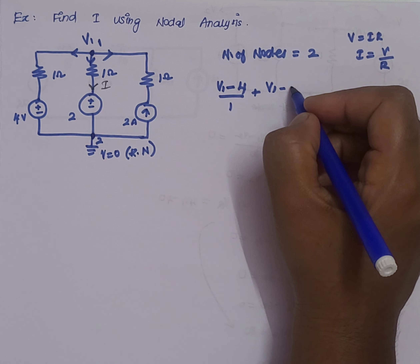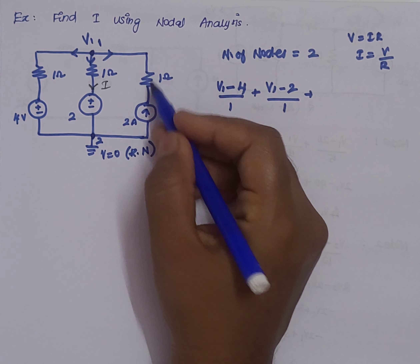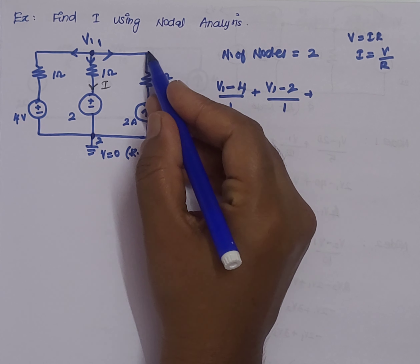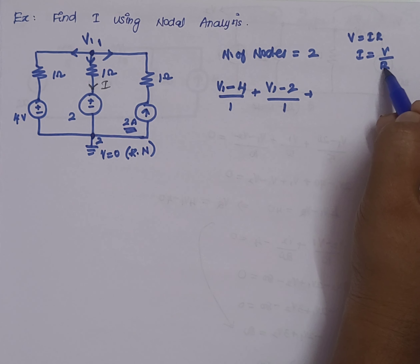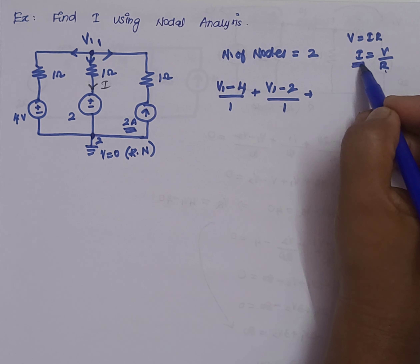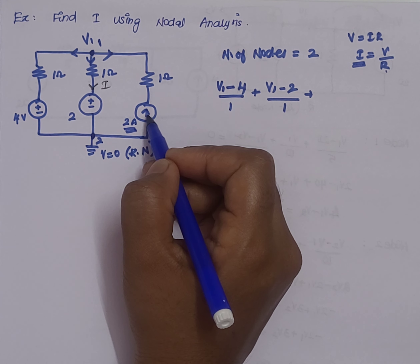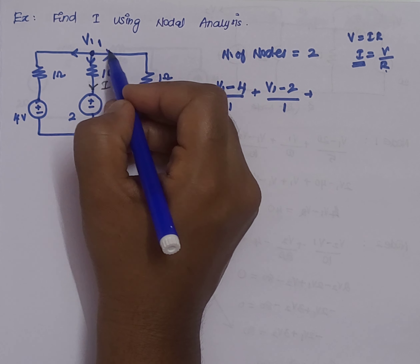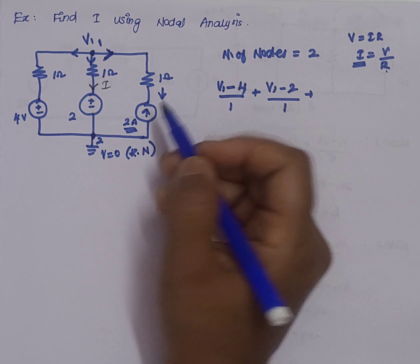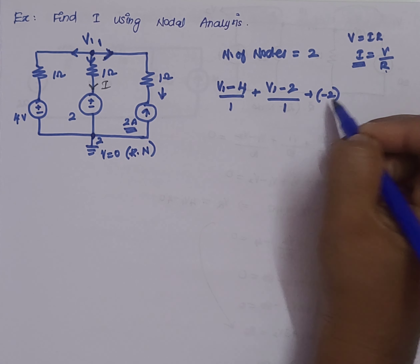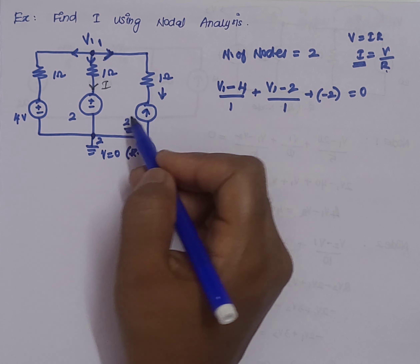For the second branch, the current is (V1 − 2) / 1, since the voltage source is 2V. For the third branch, the current source value is directly 2 amperes, so we write I directly without using V/R form. Since the current source direction is opposite to the assumed outgoing direction, we write it as minus 2, giving the KCL equation equal to zero.